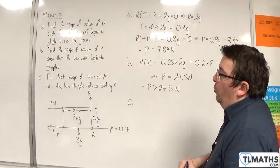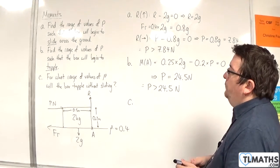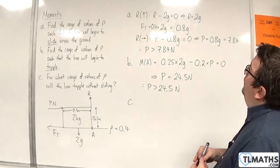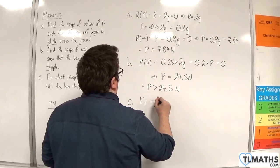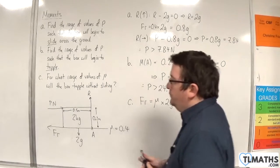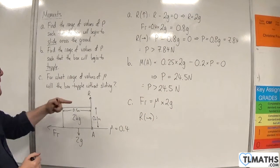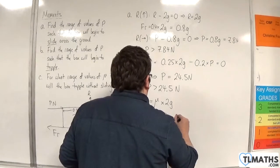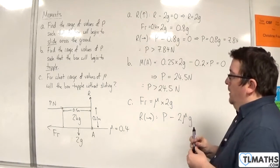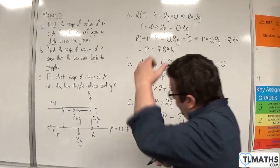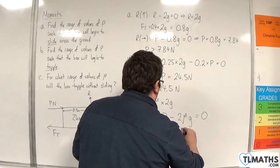For part C, for what range of values of mu will the box topple without sliding? In this case, we know that the friction is equal to mu times r, which was 2g. If we resolve horizontally, we have p take away the friction, which is 2 mu g, and we're going to put that equal to 0. So that implies that p would have to be equal to 2 mu g.